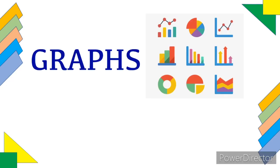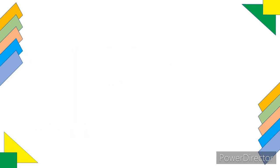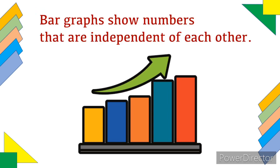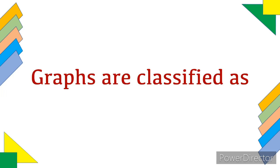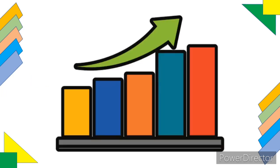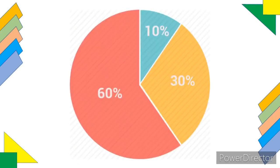First, we have graphs. These are diagrams showing the relation between variable quantities, typically of two variables, each measured along a pair of axes at right angles. Bar graphs show numbers that are independent of each other — for example, the number of people who preferred Chinese takeaways, Indian takeaways, and fish and chips. Graphs are further classified into bar graphs, line graphs, pictograph or pictogram, and pie graph.